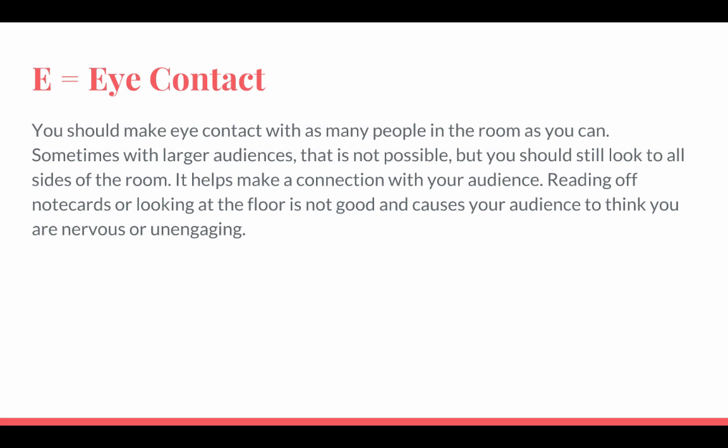Sometimes with a larger audience that's not possible, but you should still look at all sides of the room, rotating your head to make eye contact with as many people as possible. It helps you make a connection with your audience. Reading off note cards or looking at the floor causes your audience to think you are nervous or not interested. One common trick is to look at people's foreheads — it gives the appearance that you're making eye contact when you're not quite making direct eye contact.